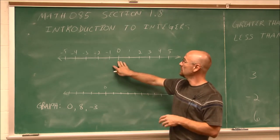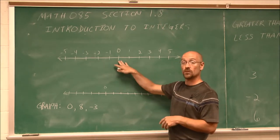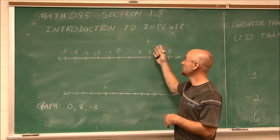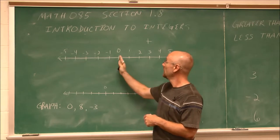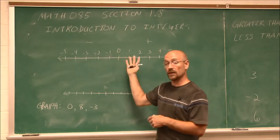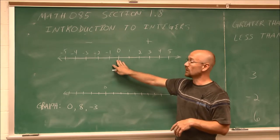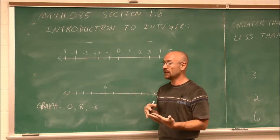One thing we have to be aware of is zero. Now these values we call positive. Anything to the right of zero is positive. Anything to the left of zero on a number line is negative. If we look at zero, what is zero? Is it positive or negative?